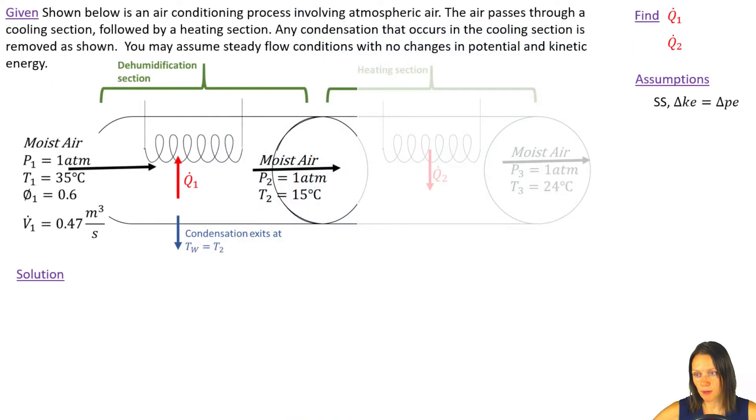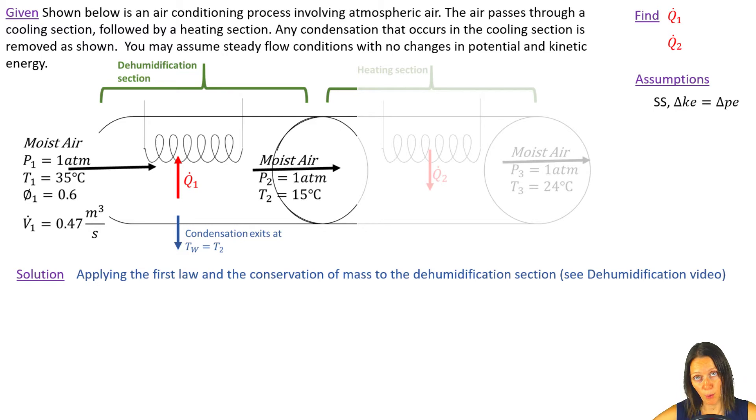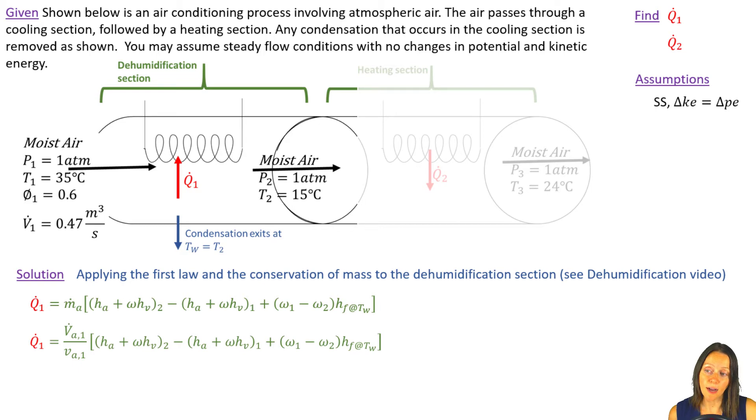Now I'm going to go back to my diagram here and I'm going to analyze that dehumidification section first. I've already got the governing equations for a dehumidification process from my dehumidification videos. This is my Q dot that I get. The mass flow rate of the air, I could put that in terms of V dot of the air at state one divided by the specific volume of the dry air at state one. By Dalton's model, I can say that the volumetric flow rate of the dry air and the mixture are exactly the same. Now I'm ready to pull off all the properties that I can off of that psychrometric chart. The only one I won't be able to pull off is that H sub F at TW, that very last term. I'm going to pull that off of my saturated water tables.